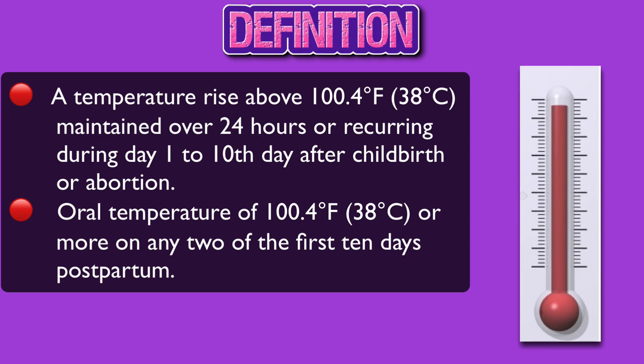Puerperal pyrexia is defined as a temperature rise above 100.4 degrees Fahrenheit, that is 38 degrees Celsius, maintained over 24 hours or recurring during day 1 to the 10th day of childbirth fever. It can also be defined as an oral temperature of 100.4 degrees Fahrenheit, that is 38 degrees Celsius, or more on any two of the first 10 days postpartum.